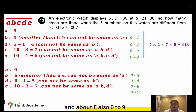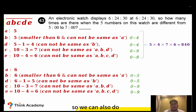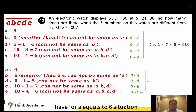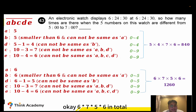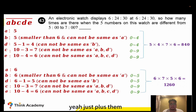For E, ten minus four equals six choices. So for the case A equals six, using the multiplication principle: six times seven times five times six equals 1260 choices.